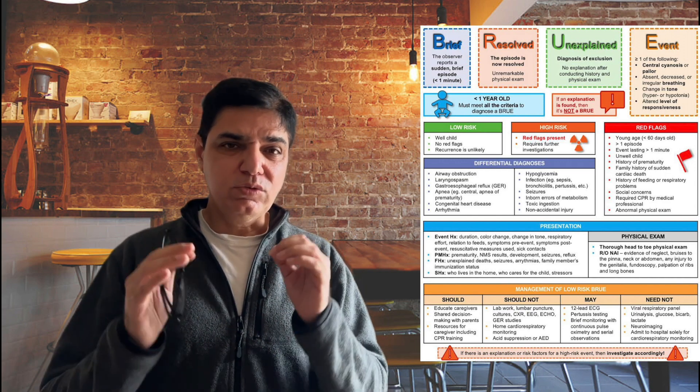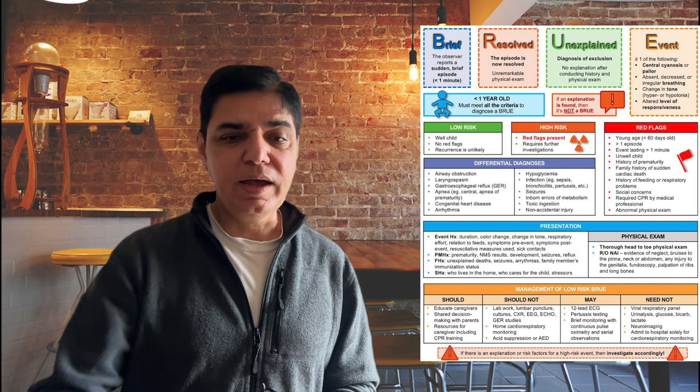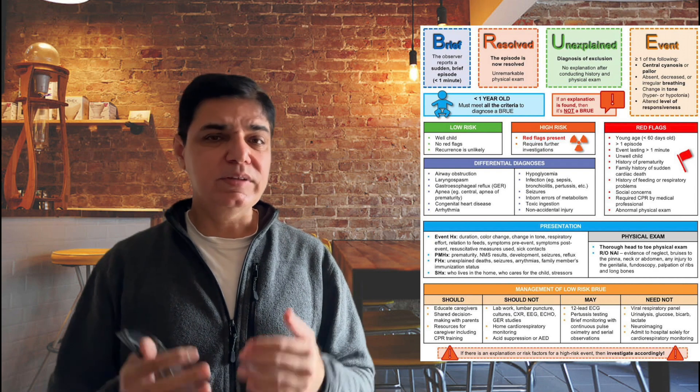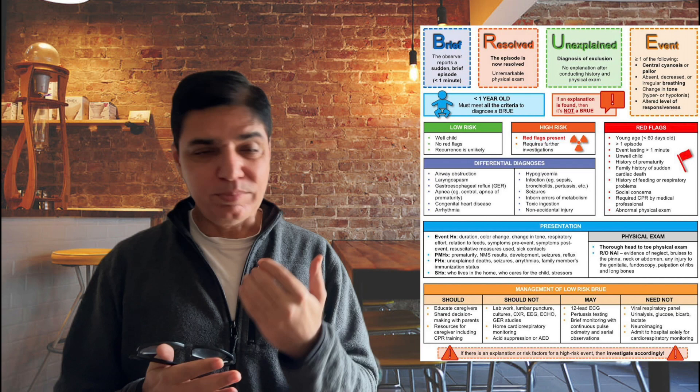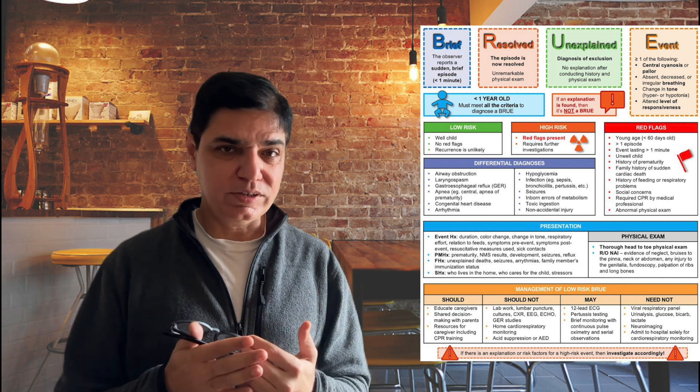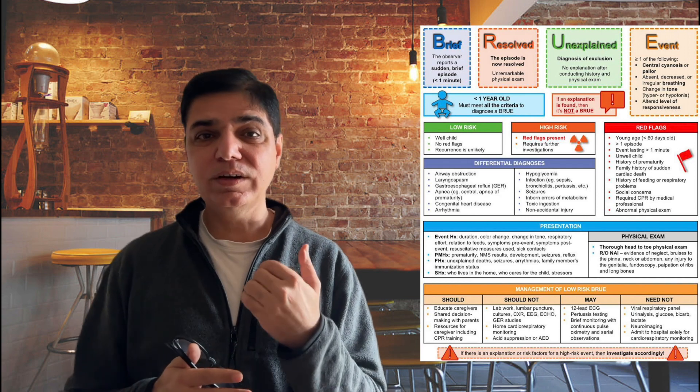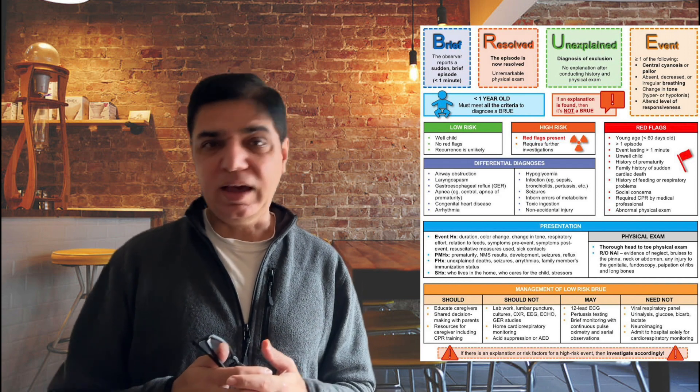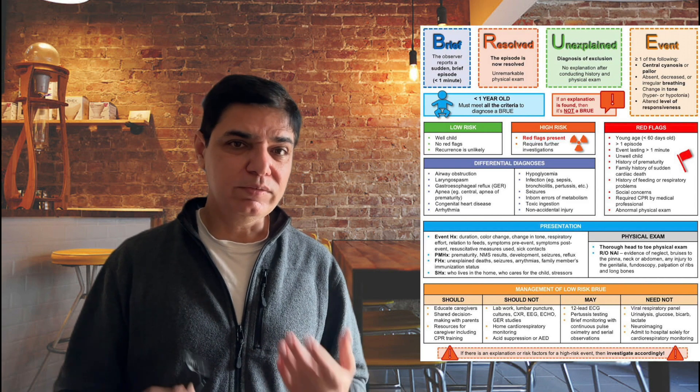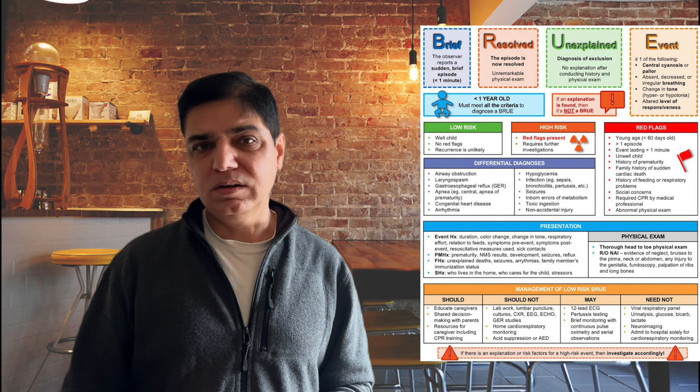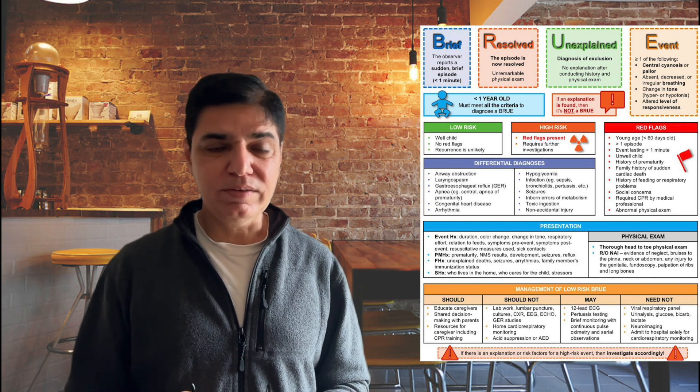So this was all about BRUE. Remember, brief, resolved, unexplained event. And brief, resolved, unexplained means that it is an unexplained event which resolves by itself and it should be lasting less than one minute. Then always you should classify to low risk and high risk. High risk would need further investigations, observations, depending on your exam findings. For low risk, remember, you need to educate the parents how to deal with any case of recurrence. And maybe you can do a cap gas and you can send them home and give them safety netting.